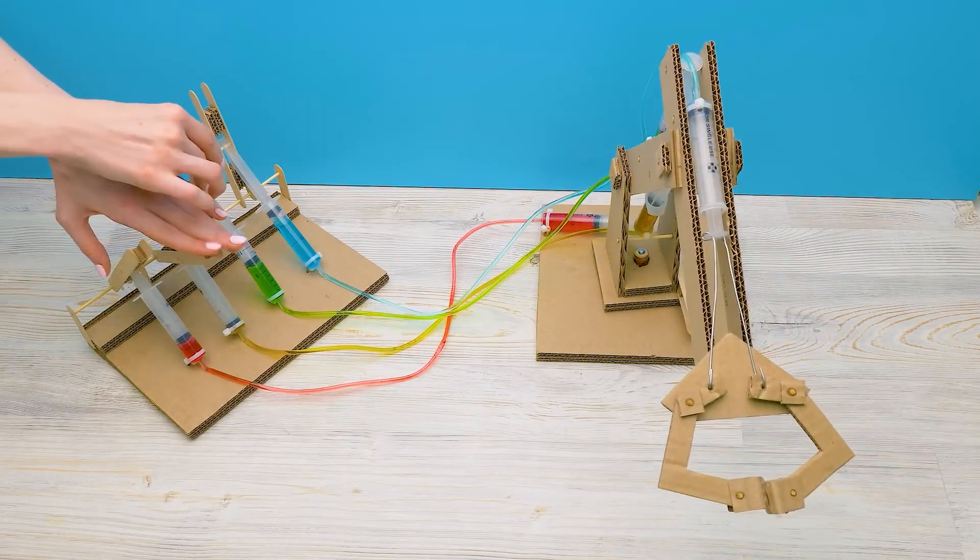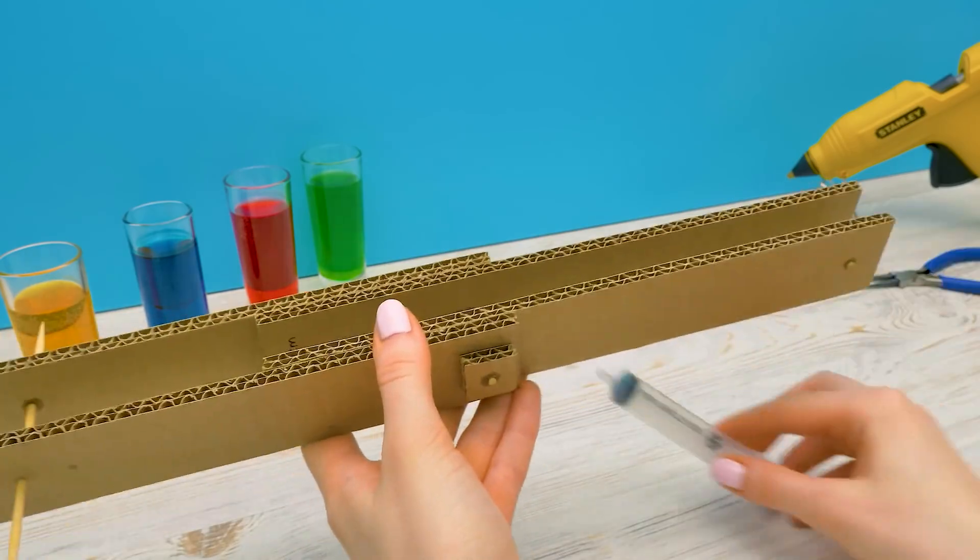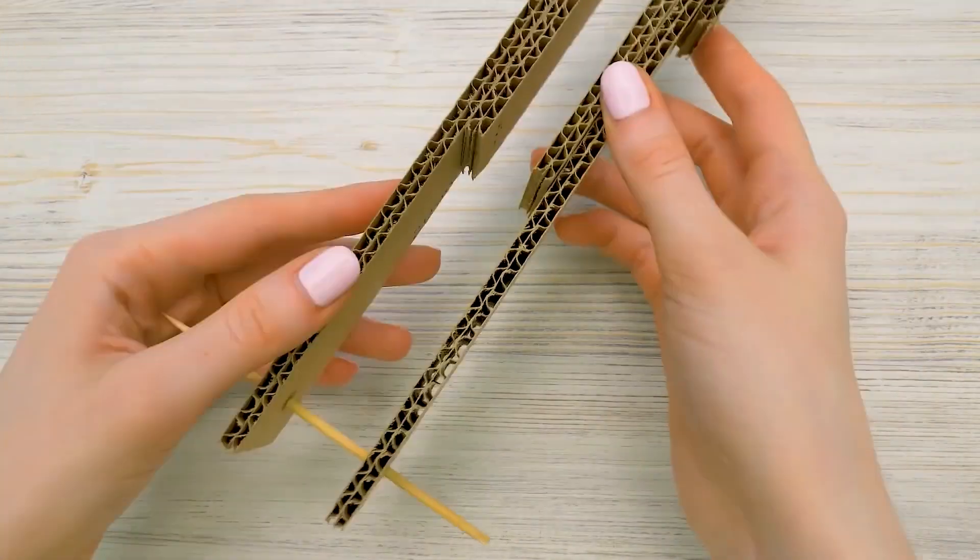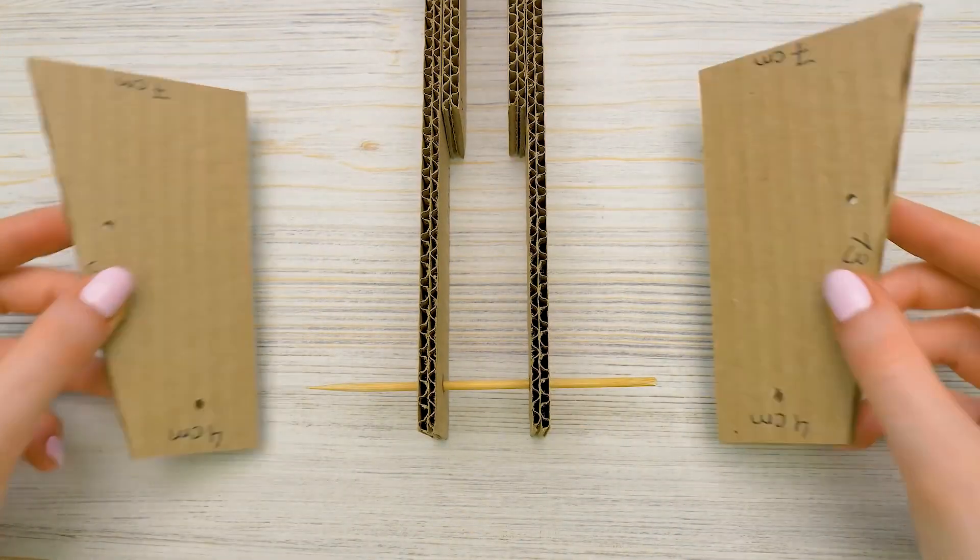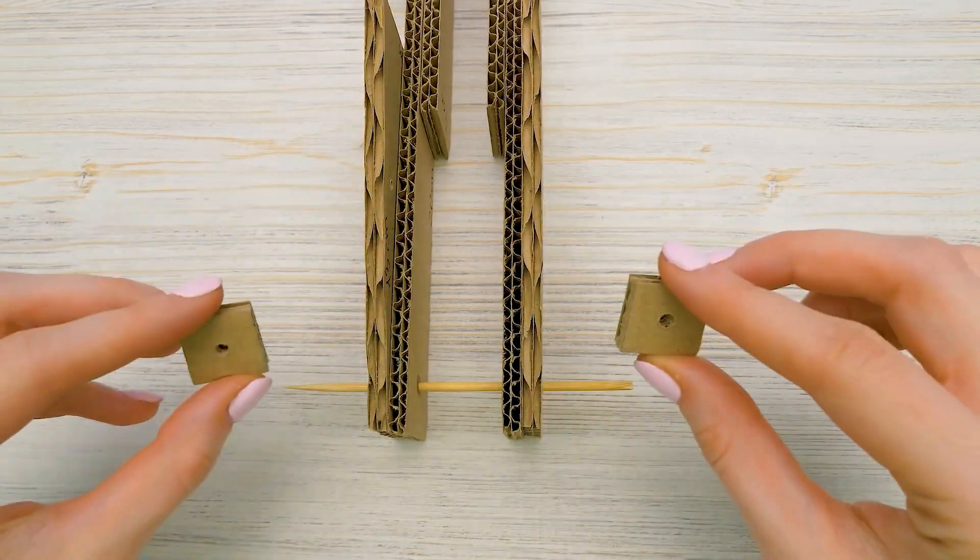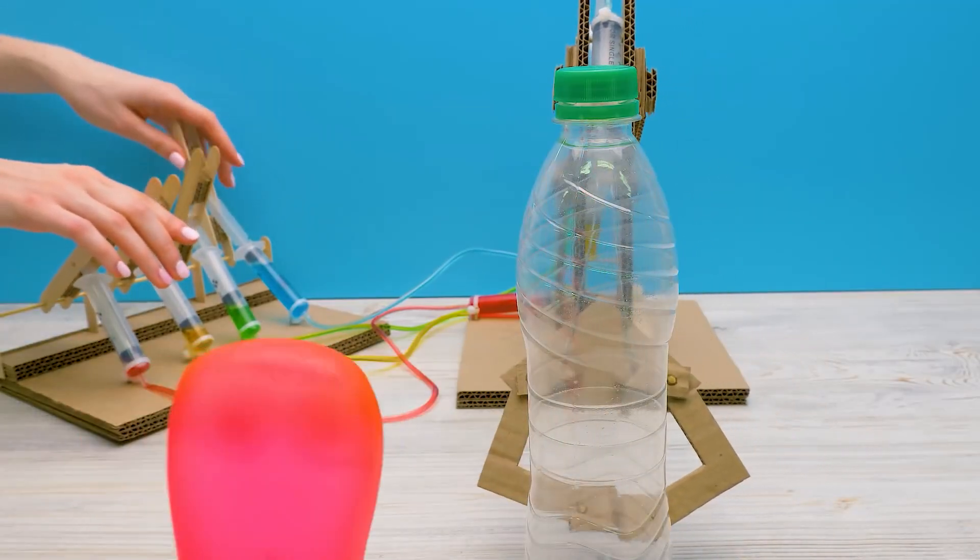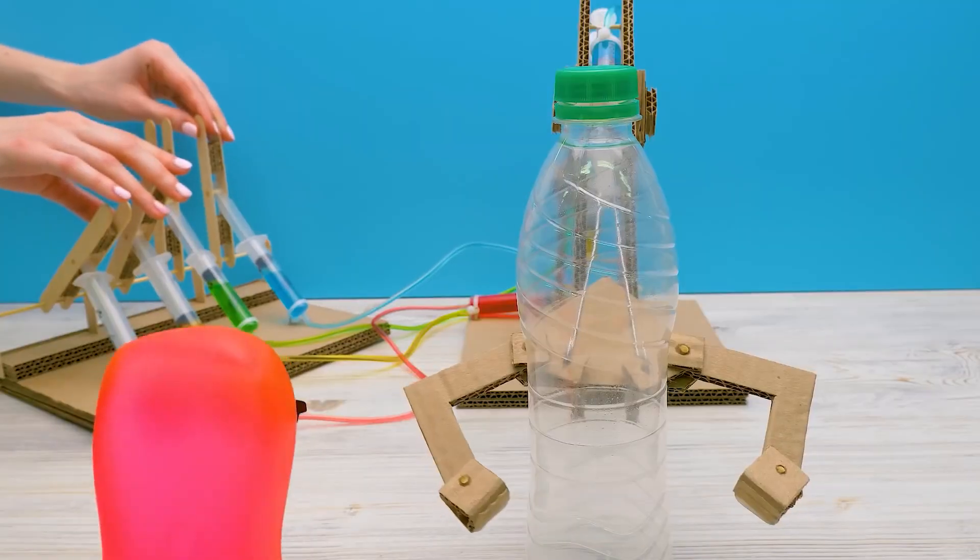You will also need a glue gun, scissors and a needle for this project. To use your Robotic Arm, hold the base in one hand and push or pull the syringes with the other hand. Watch how your Robotic Arm moves and grabs objects with the water pressure.